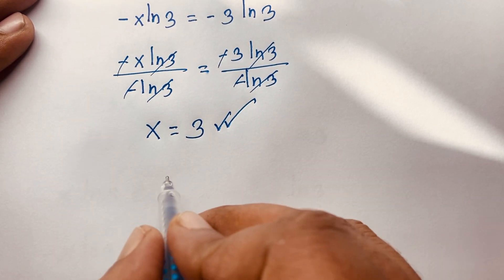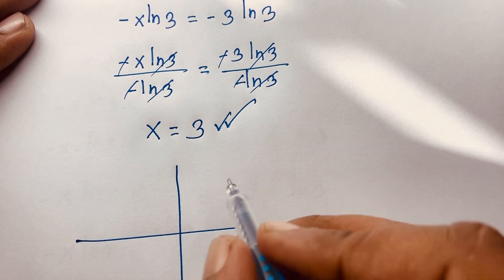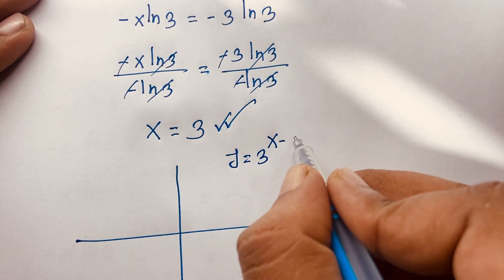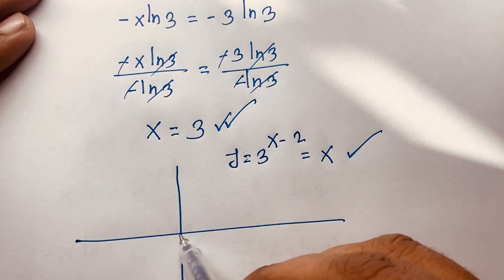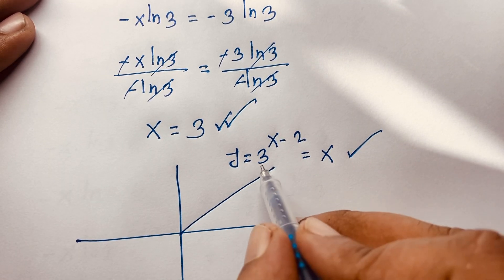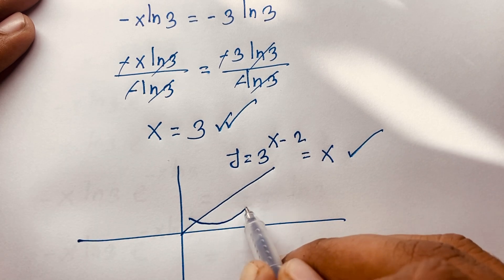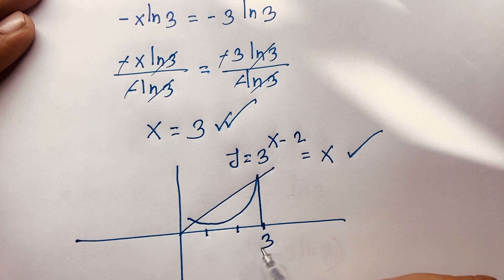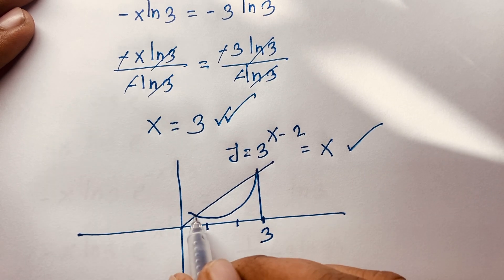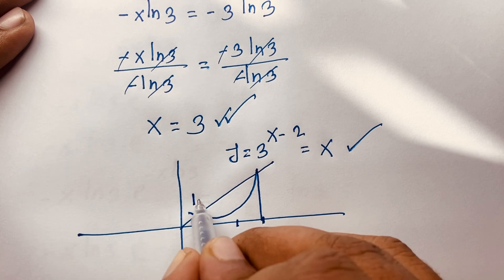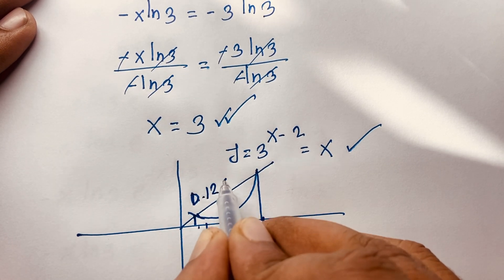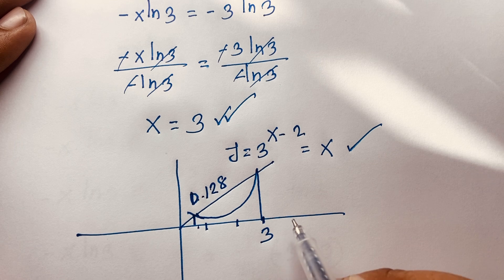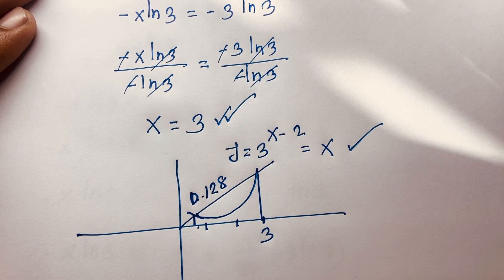Now, if I draw a graph, we have y equal to 3 to the power x minus 2 and y equal to x, which is a straight line. The curve and the line intersect at x equal to 3. There is also another intersection point at approximately x equal to 0.128. So our final answers are x equal to 3 and x equal to 0.128.